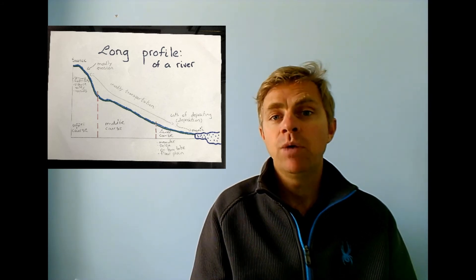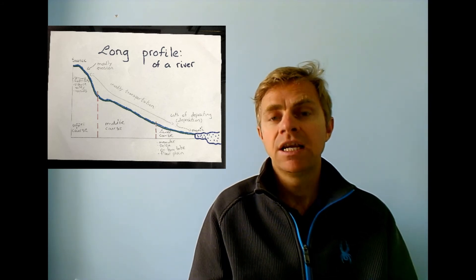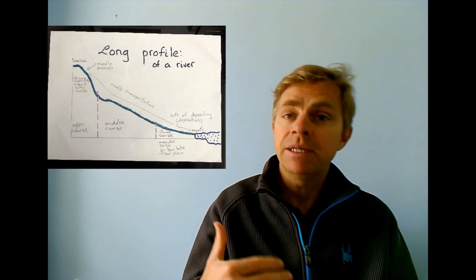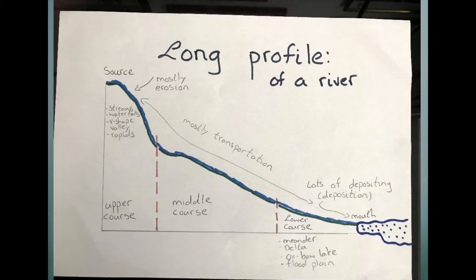The upper course is where the source is, and because it tends to be in a mountain range, the water tends to be travelling faster, it has more force, and there is a lot more erosion. You will see a lot more waterfalls, rapids, and V-shaped valleys, which we'll explain later on.